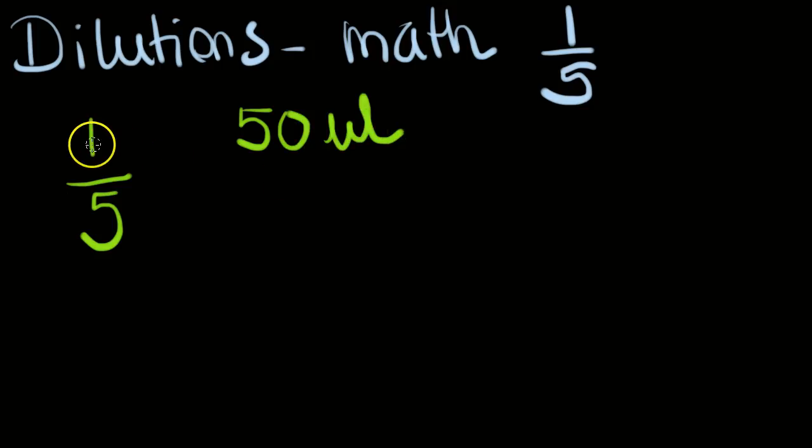So for the dilution, this is one part sample over five parts total. Therefore, your one part is going to be your 50 microliters. So how much are you going to have total? Well, to figure that out, simply do this: